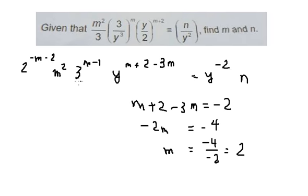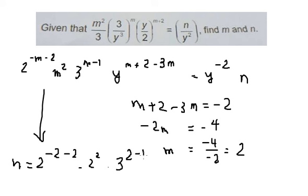The value of n. We have 2 to the negative 2, multiply with 2 to the power of 2, multiply with 3 to the power of 2 minus 1.